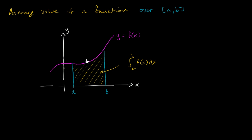So that if we multiply this height times this width, we're going to get the area of a rectangle. That rectangle is going to have the same area as the area under the curve.